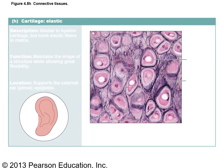Elastic cartilage also shows lacunae with cells, but contains elastic fibers that make the tissue very pliable — you can bend and twist it and it bounces back into shape. It makes up the inner cartilage of the external ear and the epiglottis, the flap that folds over the larynx. A memory tip: E for elastic stands for ear and epiglottis.